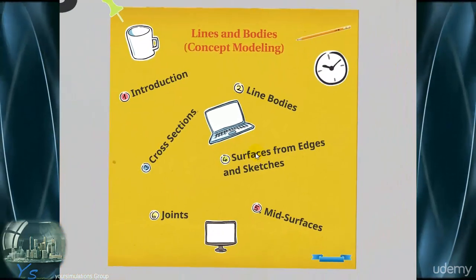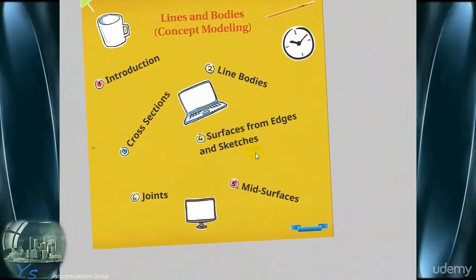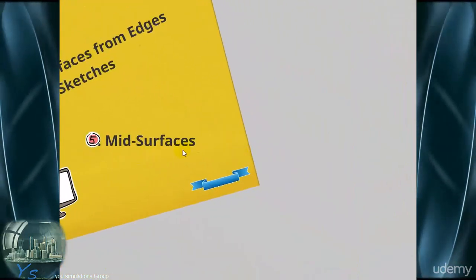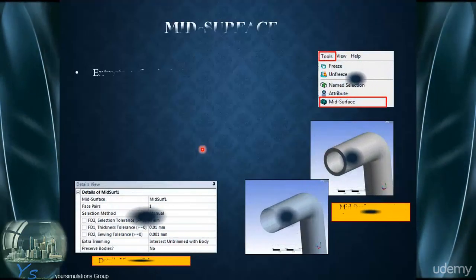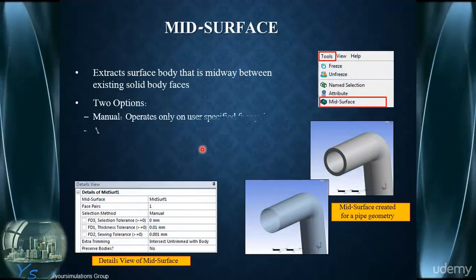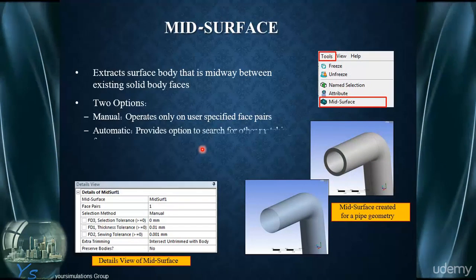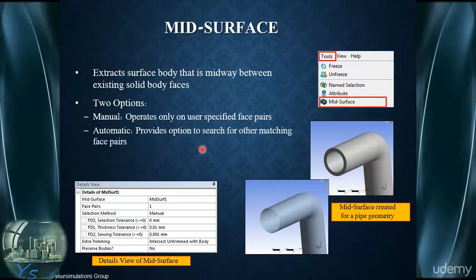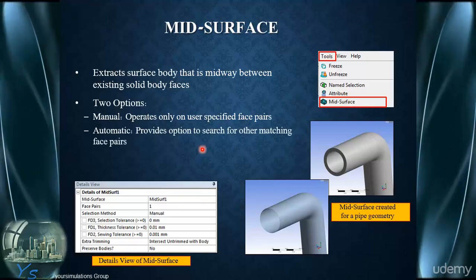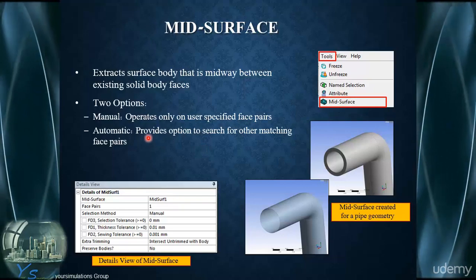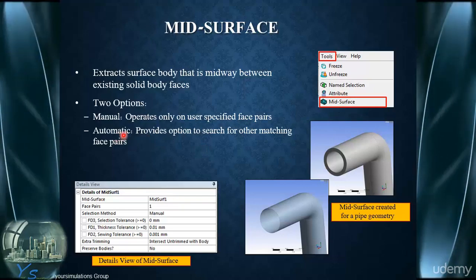Mid-surfacing is another useful tool for shell modelling. This allows us to extract a surface body that is midway between the existing faces of a pre-existing solid body. We can do that in two different ways: there's a manual and automatic approach.